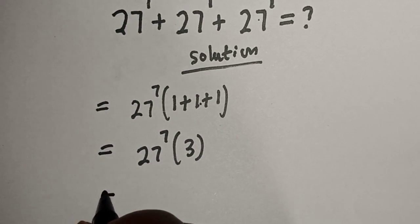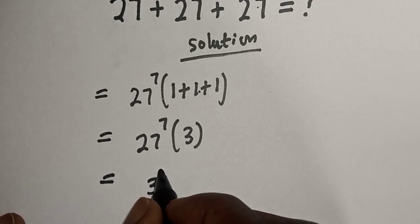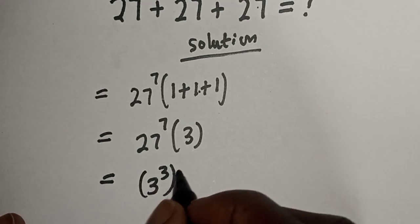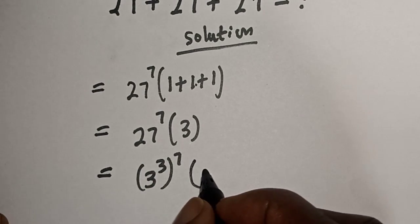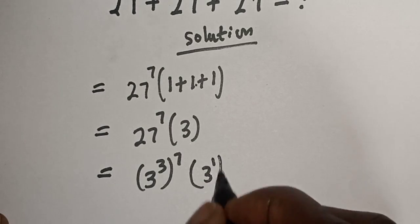Then, this is equal to 27 can be written as 3 raised to power 3 to the power of 7. Then, multiply by 3. This is also raised to power 1.